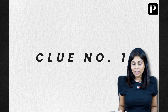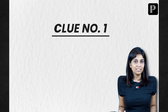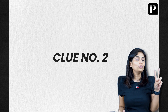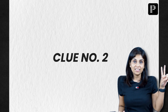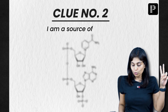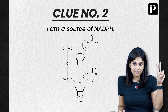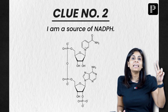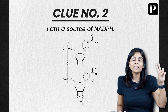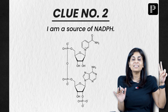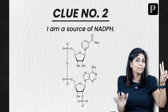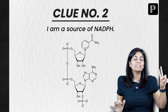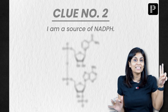Clue number one for this question is: I am an enzyme. Clue number two is interesting: I am a source of NADPH. If you know all the sources of NADPH, you can try your luck by typing the right answer in the chat box below, and give yourself 20 points if your answer happens to be right.